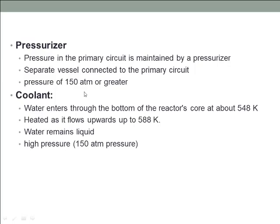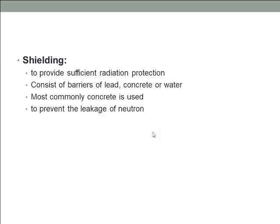Shielding is also a necessary component, as in the boiling water reactor. In the pressurized water reactor, shielding must be used to provide sufficient radiation protection. Radiation shielding usually consists of barriers of lead, concrete, or water — most commonly concrete is used. The function of shielding is to prevent the leakage of neutrons from the reactor core, as these neutrons are dangerous and harmful for the people working around the nuclear reactor.